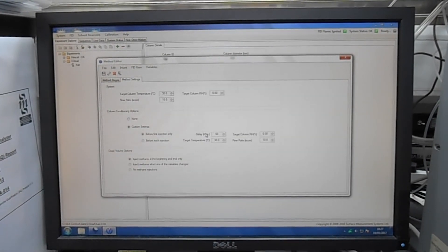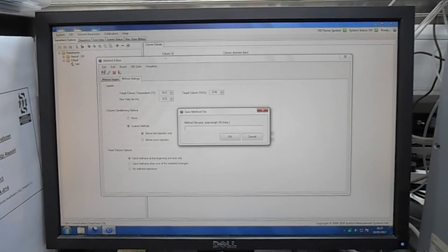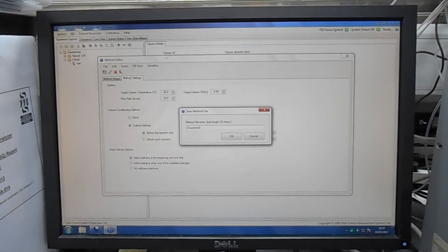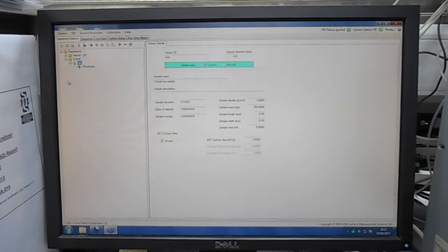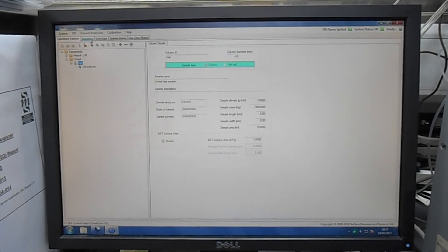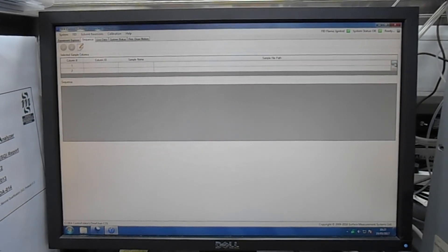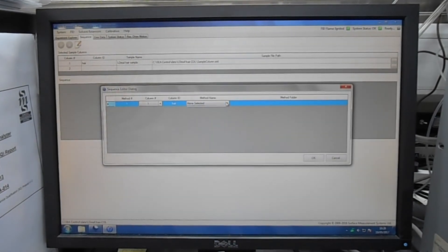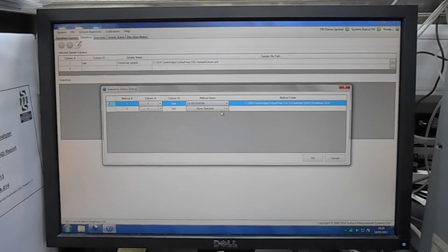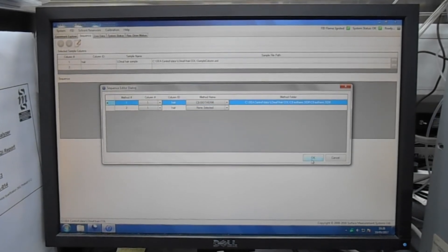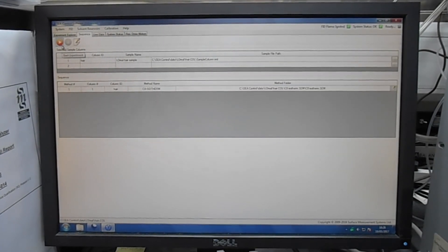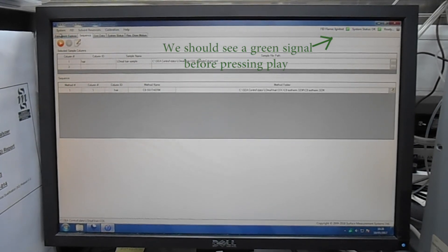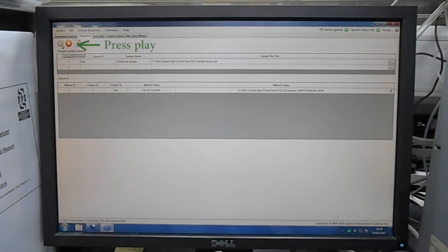Once this is done I can actually introduce custom settings for the pre-treatment of the sample that allows you to remove any potential sorbates that are stuck on the surface of the sample. Then I can load the method for each column or each sample and once the methods are loaded I can start the method by pressing play on the software and start collecting data for my experiment.